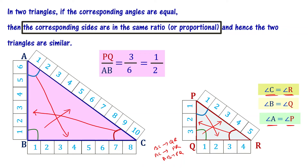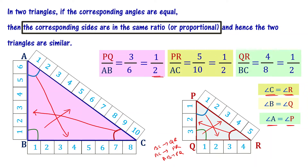Now let's take the ratios of these corresponding sides. PQ by AB is one by two. PR by AC is also equal to one by two. And QR by BC is also equal to one by two. So all corresponding sides are in the same ratio — the corresponding sides are proportional, with ratio one by two.